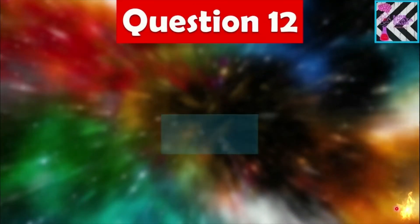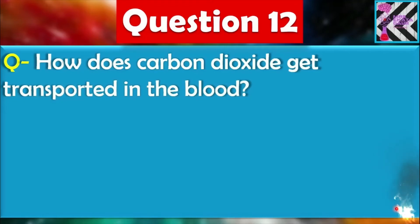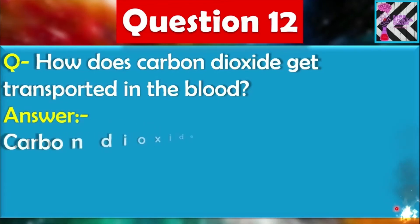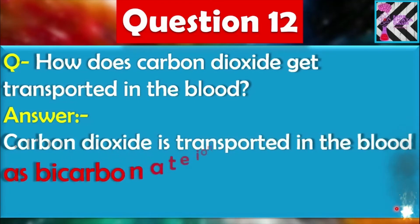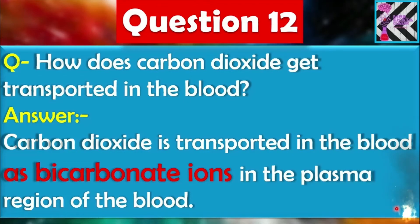Question number twelve: How does carbon dioxide get transported in the blood? Carbon dioxide is transported in the blood as bicarbonate ions in the plasma region of the blood. After that it can dissolve in the plasma. Carbon is a very important element for all kinds of functioning in our body — you will learn more about this in higher classes if you go with biology.